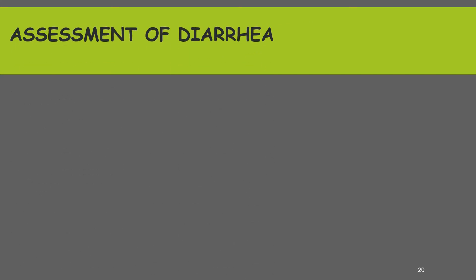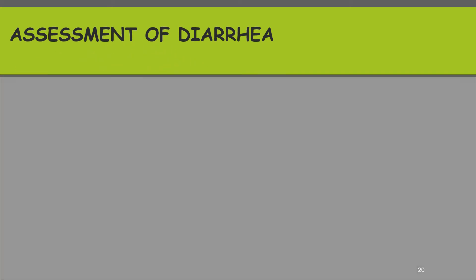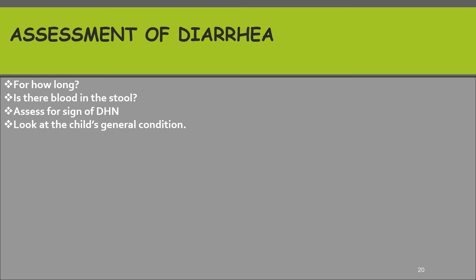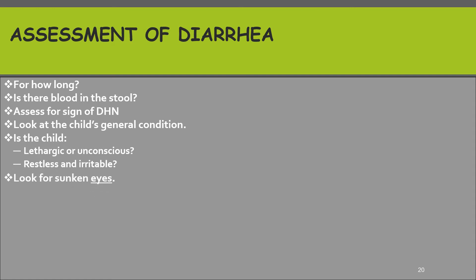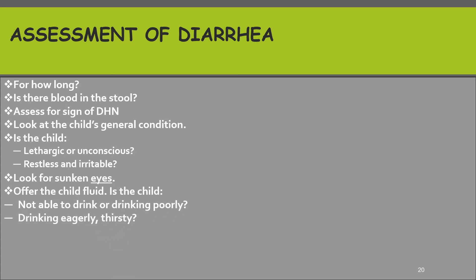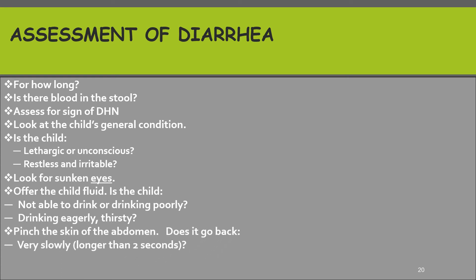When we see a child who is having diarrhea, we should assess by asking history such as how long the diarrhea has been happening and whether there is blood in the stool, and also assess for signs of dehydration. We should look at the child's general condition — is the child lethargic or unconscious, or restless and irritable — to classify the severity of the dehydration. We should also look for sunken eyes and offer the child fluid, noting whether the child is not able to drink or drinks poorly, or is drinking eagerly and is thirsty. And we should pinch the skin of the abdomen to see if it goes back very slowly or slowly.